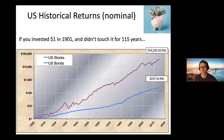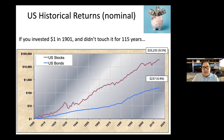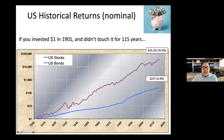This chart shows U.S. historical returns from 1901 to 2015. If you invested one dollar in U.S. stocks in 1901 and didn't touch it for 115 years, at the end of that period you'd have about $33,255 — a 9.5% nominal return. Below that is bonds: investing one dollar in U.S. bonds for the same period would yield about a 4.9% return, or $237. There are a few caveats: this is before taxes and does not account for inflation.